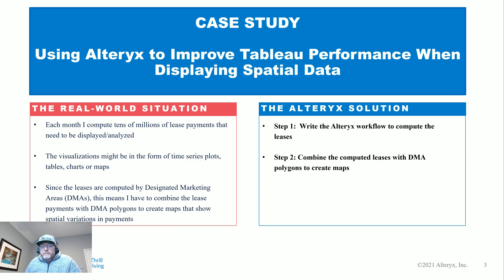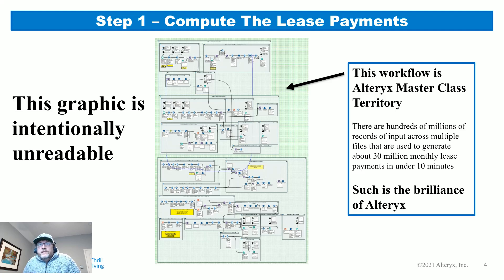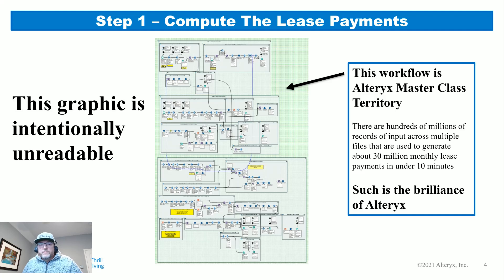I had to write a workflow to compute the leases and then combine the computed leases with the DMA polygons. This graphic is intentionally unreadable — it's a workflow with hundreds of millions, technically billions of records coming in. I compute about 30 million lease payments per month, and it all happens within about 10 minutes. It took two months to get it fully functional and tested, after teams of people tried for three years using traditional programming methods. That's the brilliance of Alteryx.